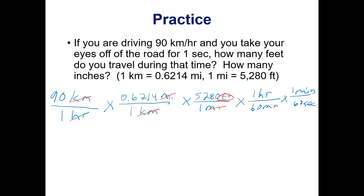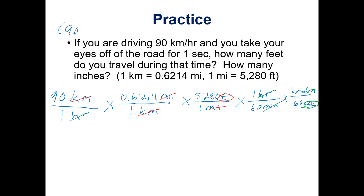We cancel hours with hours and minutes with minutes, and we're left with seconds. When you put this into your calculator, open a parentheses and type 90 times 0.6214 times 5,280, then divide by — and we don't need to put the ones in, since multiplying or dividing by one doesn't change anything — so divide by, and open a new parentheses, 60 times 60, then close your parentheses.